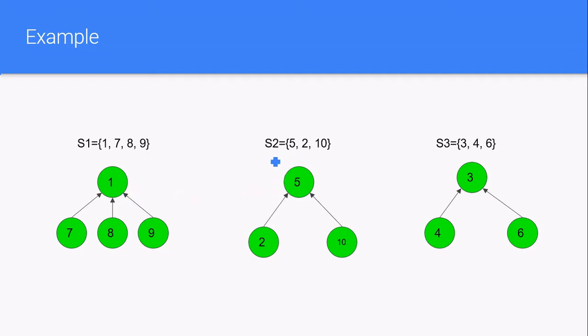And the next disjoint set is 5, 2, 10. So these two sets are called disjoint because they don't have any element in common. And we have one more set 3, 4, 6 and this also does not have any element in common. So this is called disjoint sets.